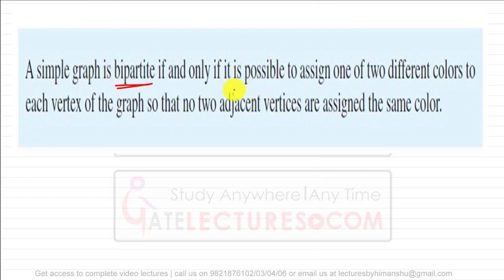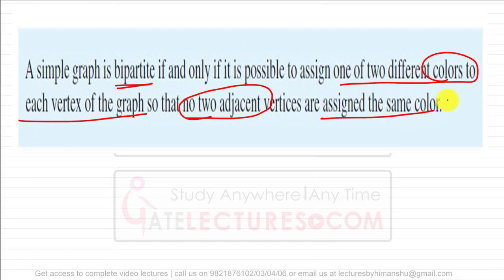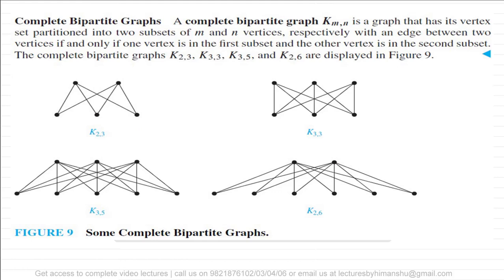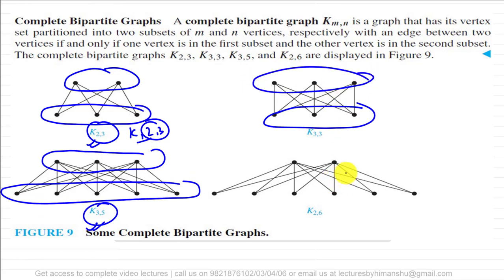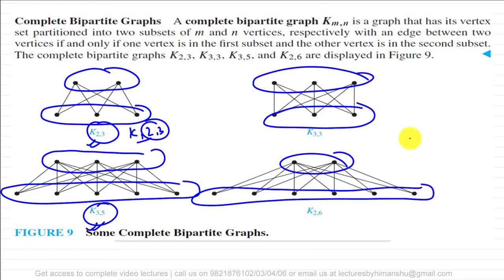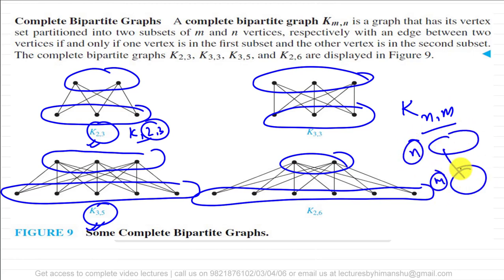Bipartite graphs are denoted K_{n,m}, where n is the number of vertices in the first set and m is the number in the second set. For example, K_{2,3} has 2 vertices in the first set and 3 in the second; K_{3,5} has 3 and 5; K_{3,3} has 3 in each set; K_{2,6} has 2 and 6. In the next video we will look at more concepts related to graph theory.